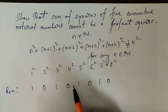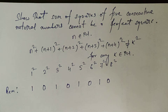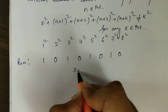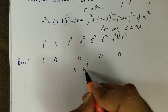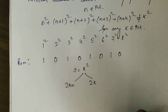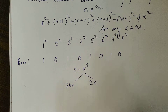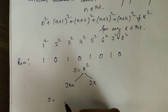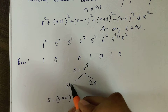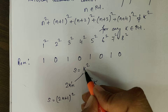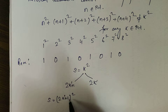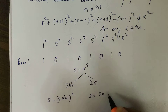Let us start proving this result. Any perfect square S can be written as the square of a natural number K. From here we can say that K is either odd or K is even. If K is odd then S = (2K' + 1)², and if K is even then S = (2K')².